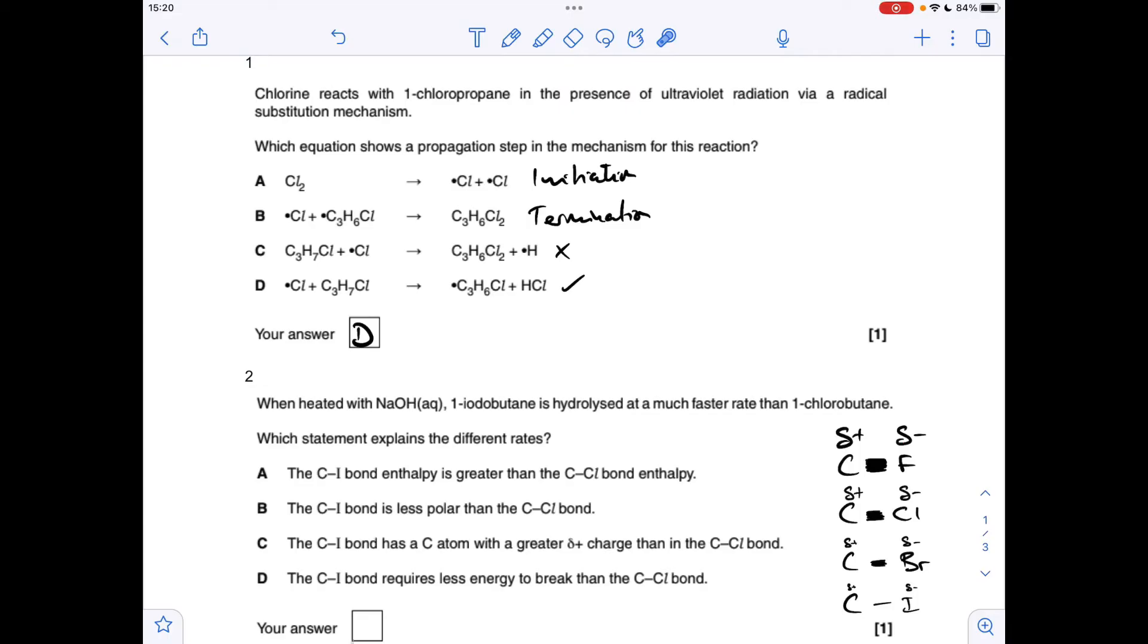So what's the key factor in the hydrolysis reaction that dictates the rate of the reaction? It's the bond enthalpy. So the weakest bond has the fastest rate because it breaks really easily. So that means the answer to two is D.